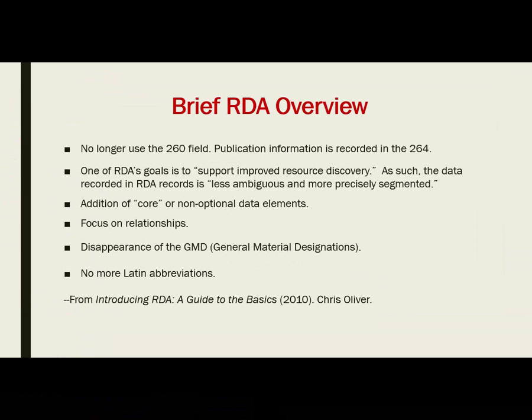We don't use the 260 field anymore. In MARC, they decided to create the 264, and I'm not really sure why because they do the same thing. Some of the other big differences are: we've done away with the GMD — the general material designation — that subfield H you see in AACR2 records. That's been replaced with the 33X fields, which we'll talk about next week. And of course, no more Latin abbreviations.